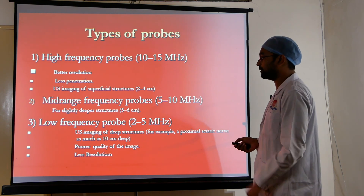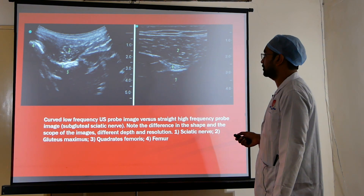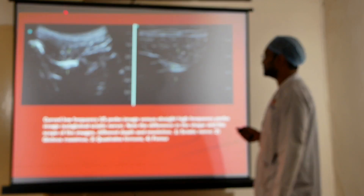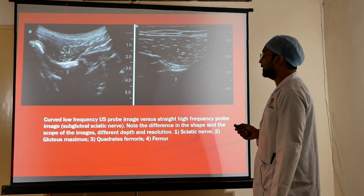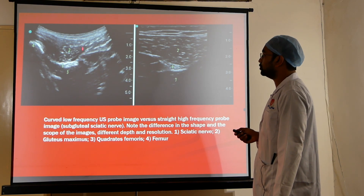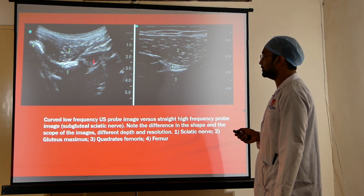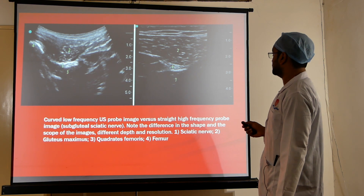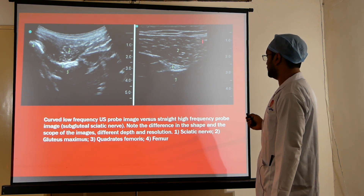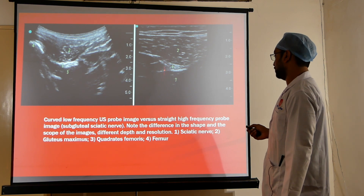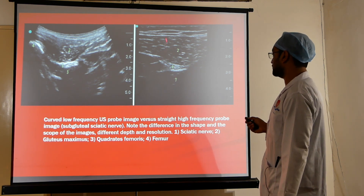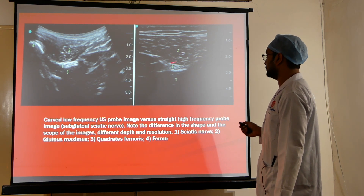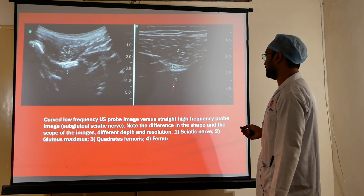Two images generated by different probes: the curvilinear probe, being a lower frequency probe, shows higher depth but less resolution, and produces a curvilinear-shaped image. The linear probe shows the image in a linear cross section with a rectangular shape. We can notice the difference in both the shape and the scope of the images.